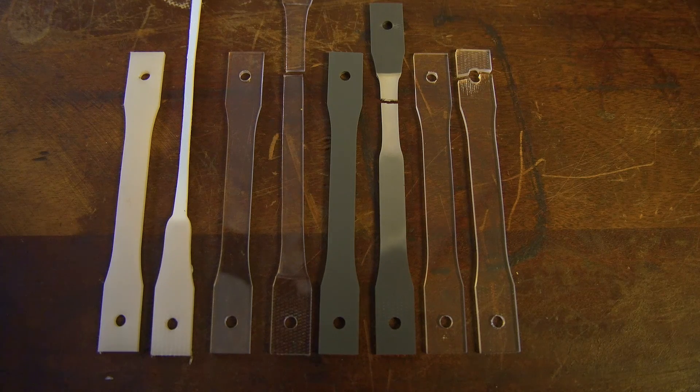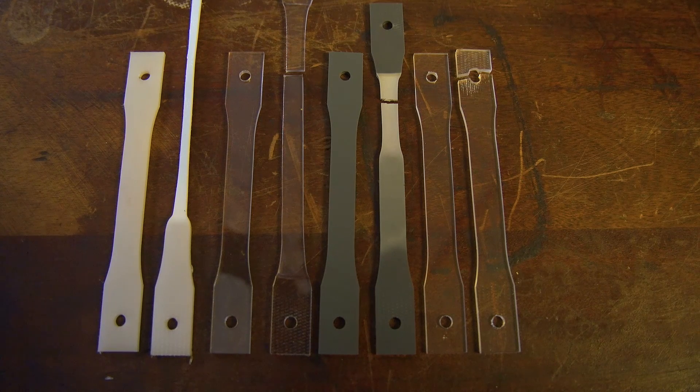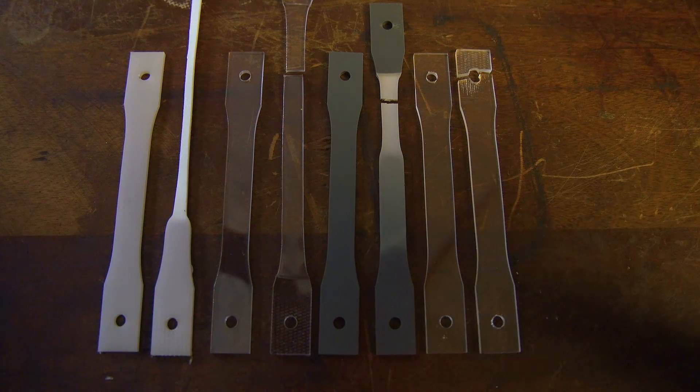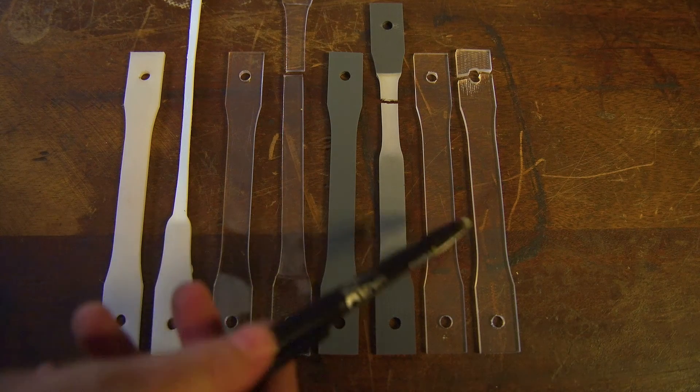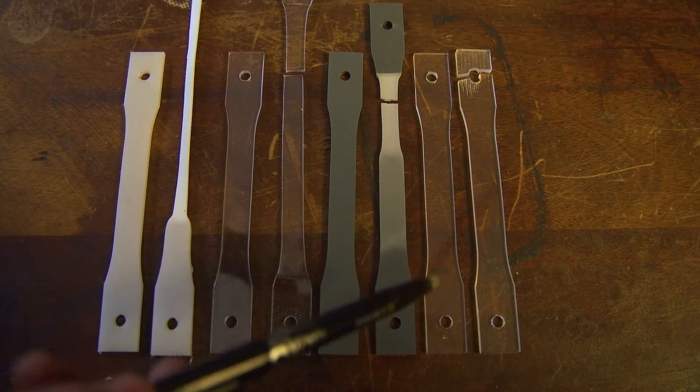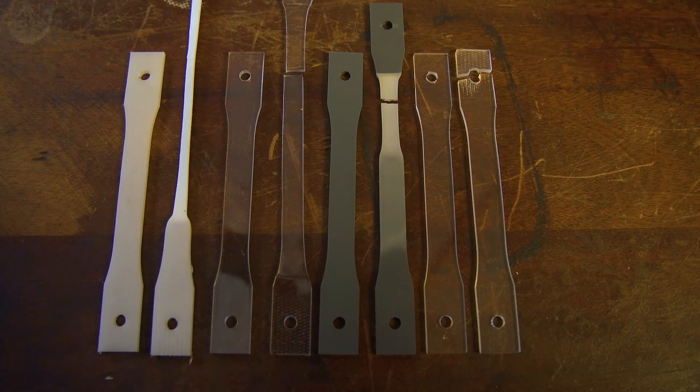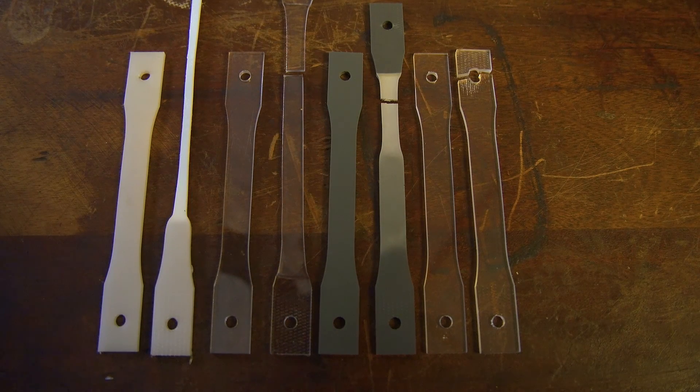So here we have a comparison of two of the samples that we've shown you being tested, and two of the samples that I have tested off the video. On the far right over here, we have the Perspex sample. As you can see, the Perspex sample did not plastically deform much, and it actually failed in the grips. And this is evident of the brittle nature of the Perspex.